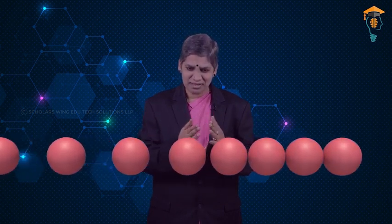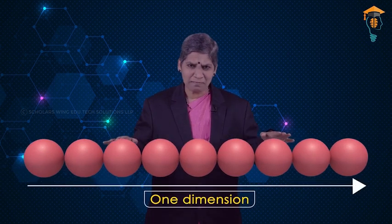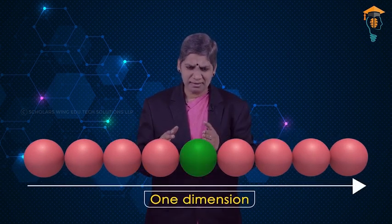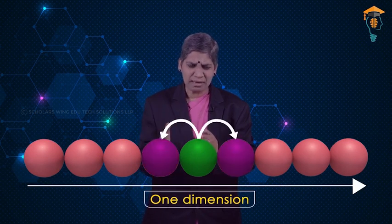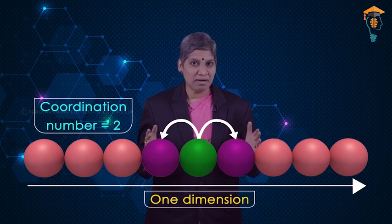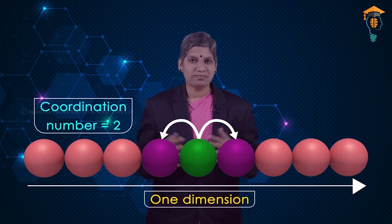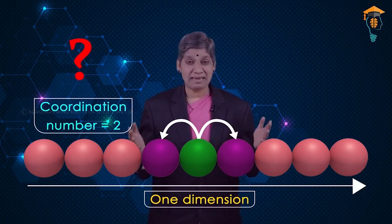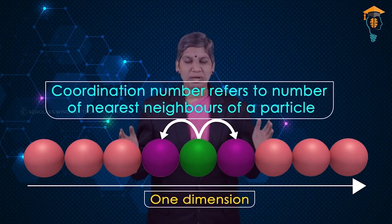Let us take up the first step, that is packing in one dimension. Here, packing can happen in a single dimension in only one possible way. The particles are arranged in a single row, that is in one dimension, and every particle is in contact with two other neighboring particles. Therefore, in this packing, the coordination number of each particle is two. Coordination number refers to the number of nearest neighbors of a particle.